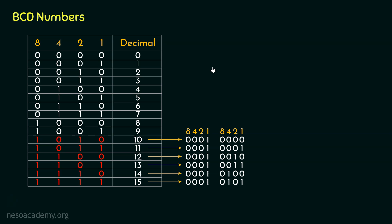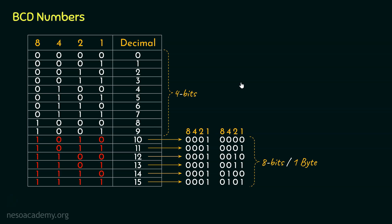We only consider single-digit decimal values when encoding each BCD digit. Now, when BCD numbers are operated on — through additions or subtractions — the results may fall into invalid BCD sequences. This happens because numbers form themselves in binary naturally. For instance, the microprocessor operates in binary, so adding 9 and 1 results in binary 1010, not the valid BCD 0001 0000.